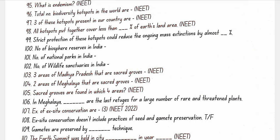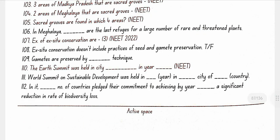In Meghalaya, sacred groves are the last refuges for a large number of rare and threatened plants. Examples of ex-situ conservation are zoological parks, botanical gardens, and wildlife safari parks. Ex-situ conservation also includes seed and gamete preservation; gametes are preserved by cryopreservation technique.